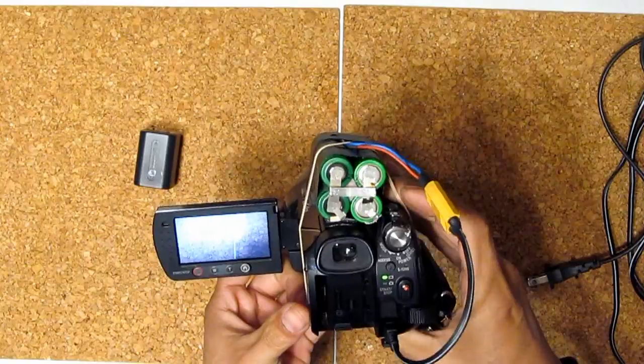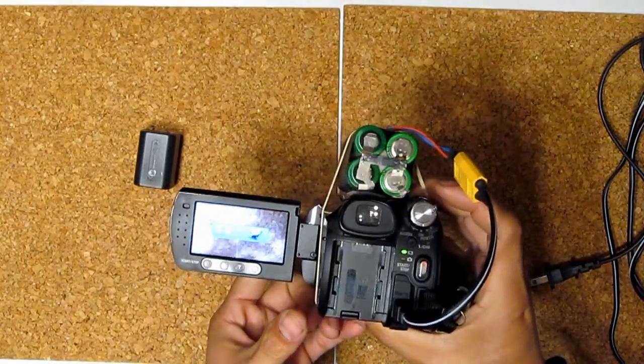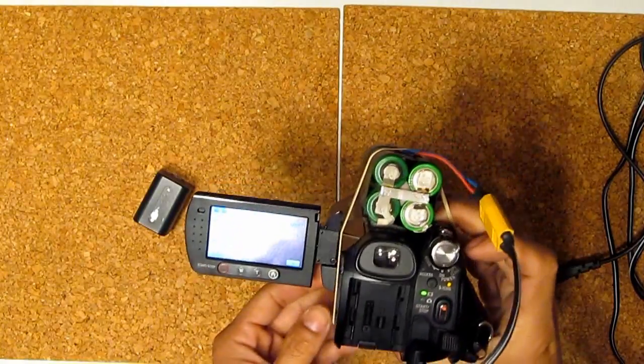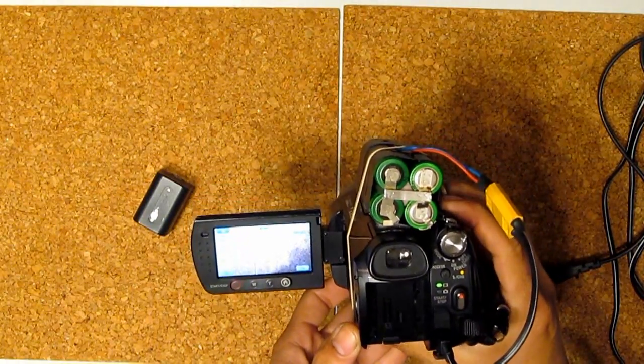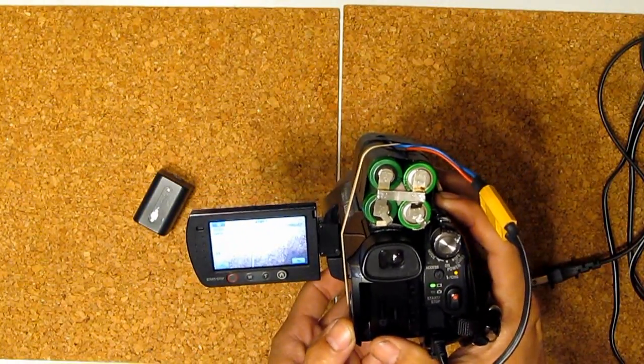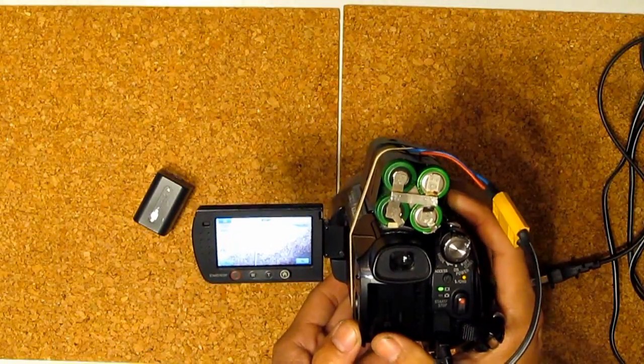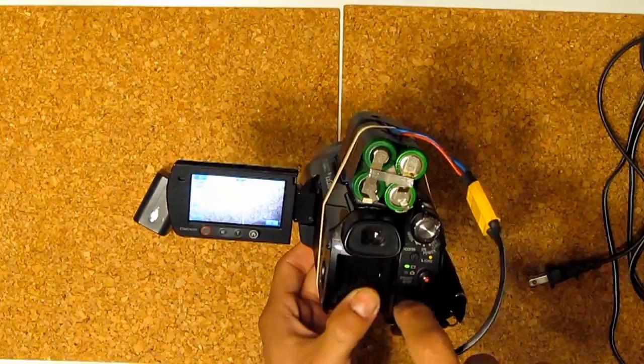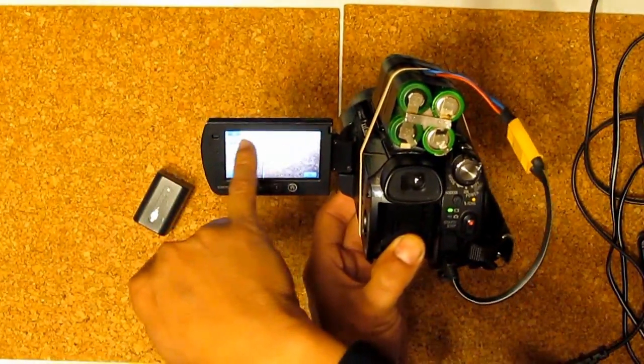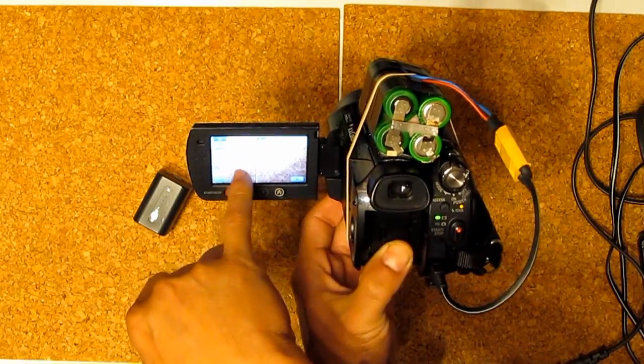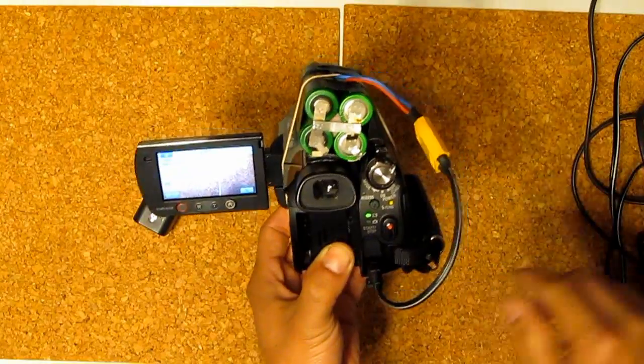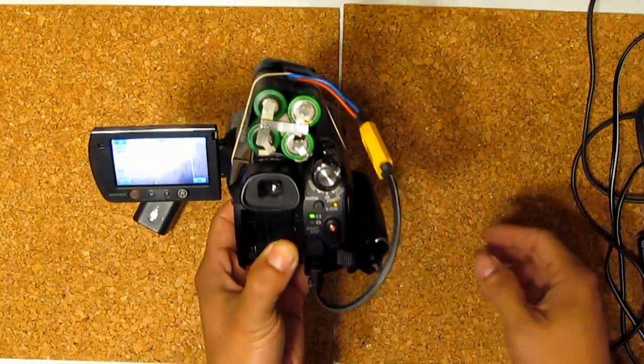It's on. There we go. And I already removed the original battery, which is here. It's working right now, you can see. So the camera is thinking that it's getting power from the AC adapter. That's why you don't see any timing here. There's no battery icon here because it's thinking it's powered from the wall outlet.